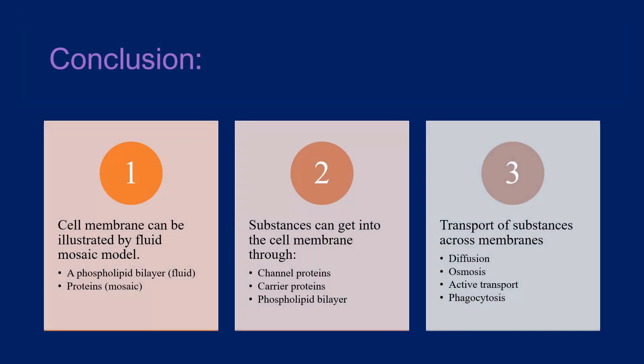In conclusion, we've covered three main things. First, the structure of the cell membrane illustrated by the fluid mosaic model. Second, the part of the cell membrane that different substances pass through. And third, the transport of substances across membranes, including diffusion, osmosis, active transport, and phagocytosis.